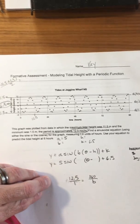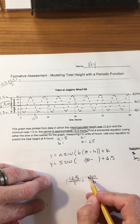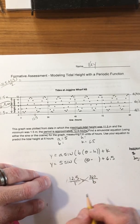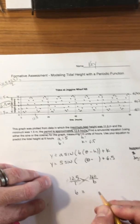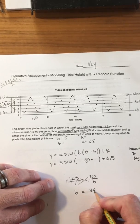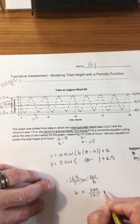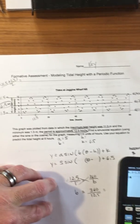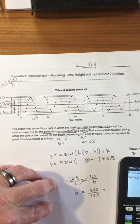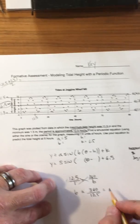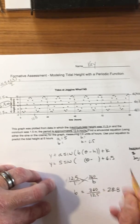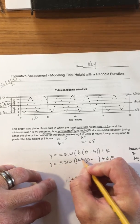And then we can solve for b. So if we cross multiply and solve, I'm going to just do it in my head but b equals 360 over 12.5. 360 divided by 12.5 is 28.8.